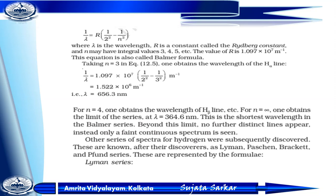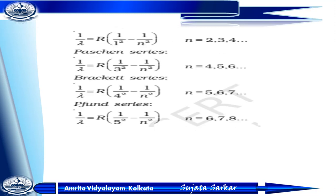Other series of spectra of hydrogen were subsequently discovered and named after their discoverers: Lyman, Paschen, Brackett, and Pfund series. The Lyman series: 1/λ = R(1/1² − 1/n²), where n = 2, 3, 4, etc. The Paschen series: 1/λ = R(1/3² − 1/n²). The Brackett series: 1/λ = R(1/4² − 1/n²). The Pfund series: 1/λ = R(1/5² − 1/n²), where n = 6, 7, 8, etc. For Brackett, n = 5, 6, 7; for Paschen, n = 4, 5, 6, etc.